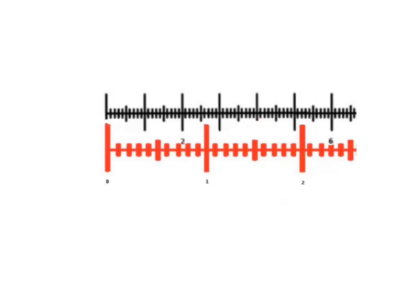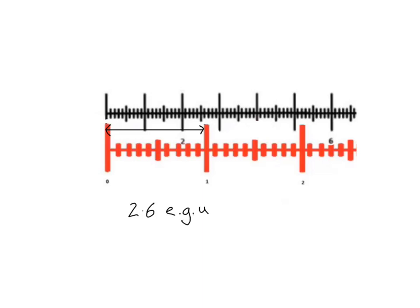Now we have to do the same thing with our other objective lens. The total magnification is going from ×40 to ×100, an increase of 2.5×, but we still need to calibrate it properly because our lenses might not have a perfect magnification — so you can't just do a simple multiplication or division. Here we can see our eyepiece graticule and our now-magnified stage micrometer in red. I'm going to take a specific length to work out the calibration.